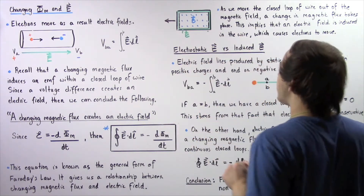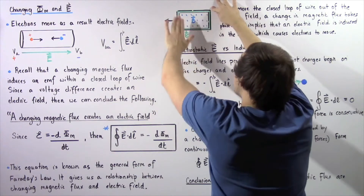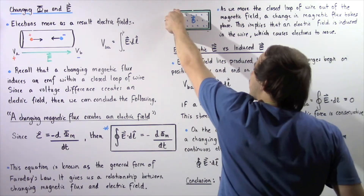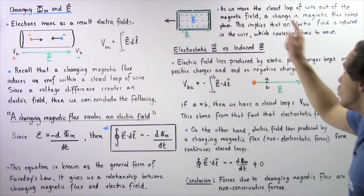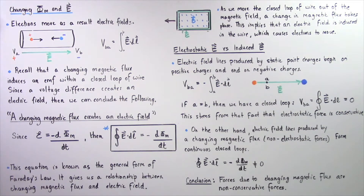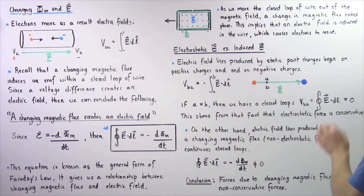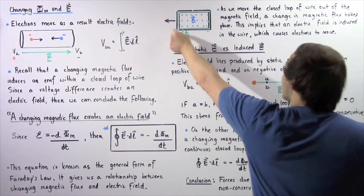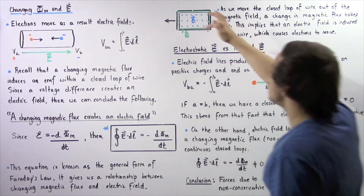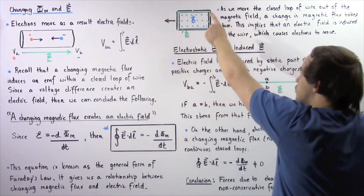Let's suppose we have a closed loop of conducting wire, and inside this loop we have a uniform magnetic field B coming out of the board. We take our loop and begin to move it. As we move our closed loop of conducting wire out of our magnetic field, a change in magnetic flux begins to take place — our magnetic flux begins to decrease. This implies that an electric field will be induced inside our conducting wire by Faraday's Law, and this causes our electrons to move. An electric field is generated as shown by the green line.